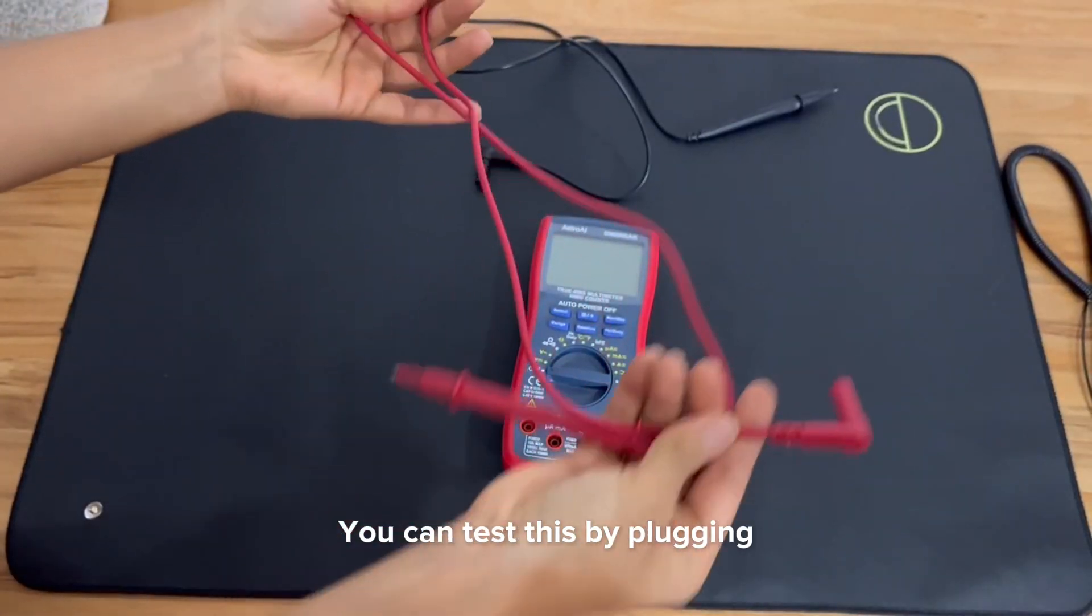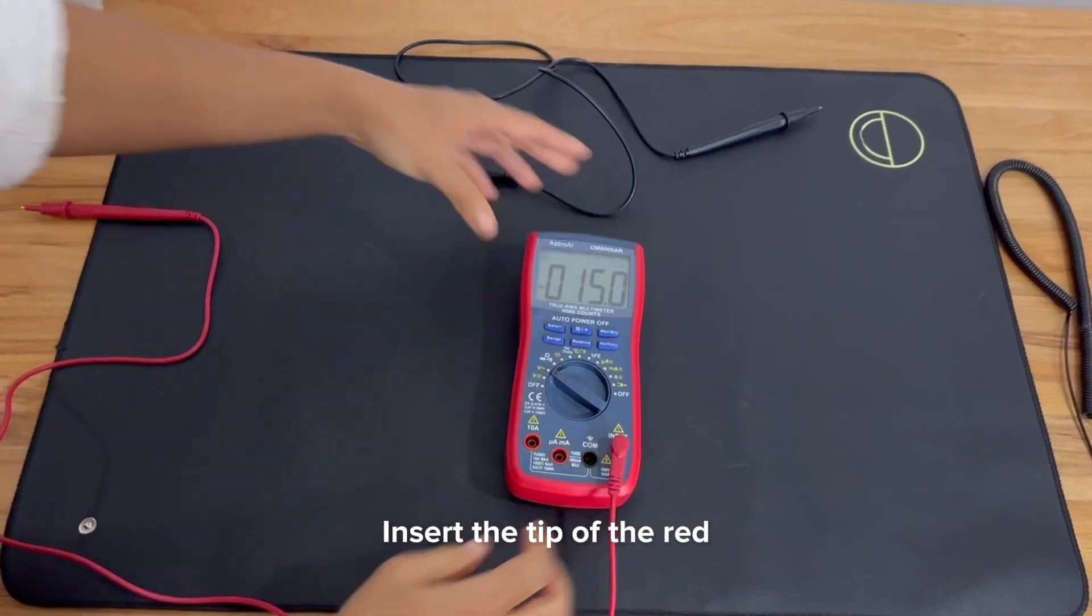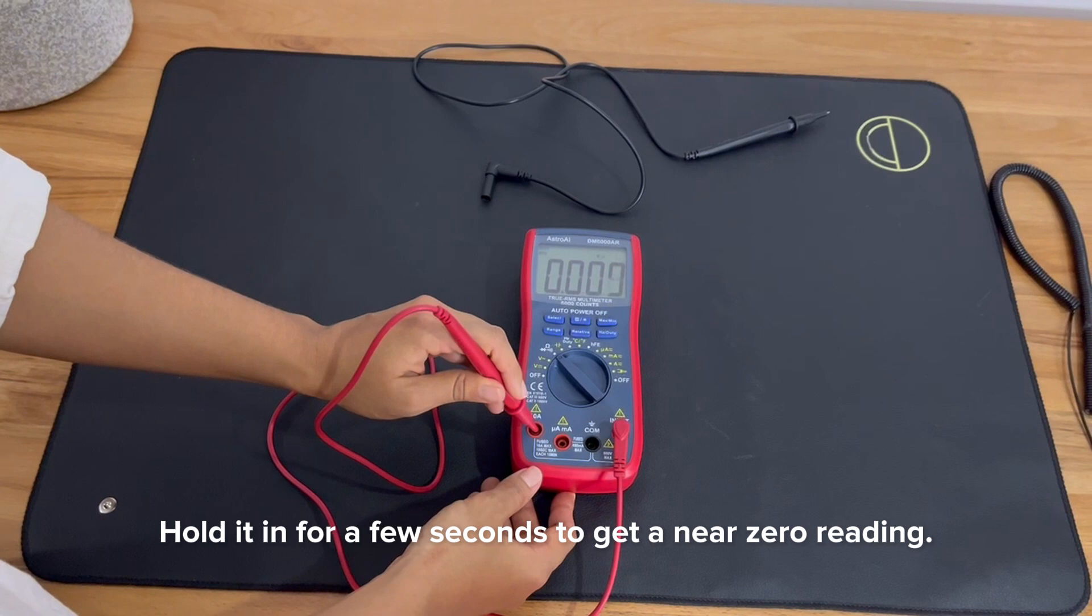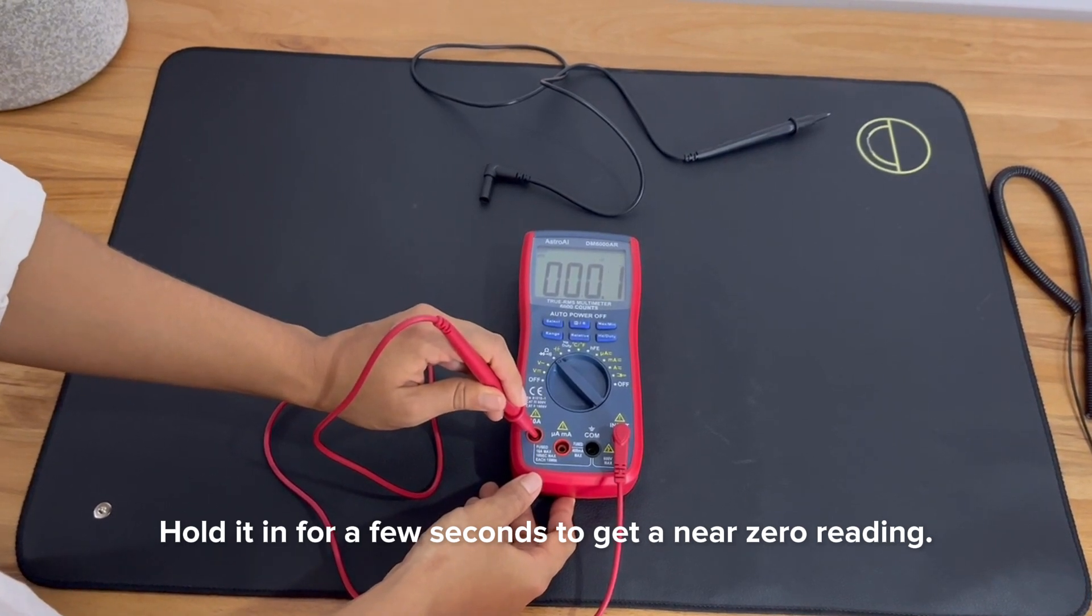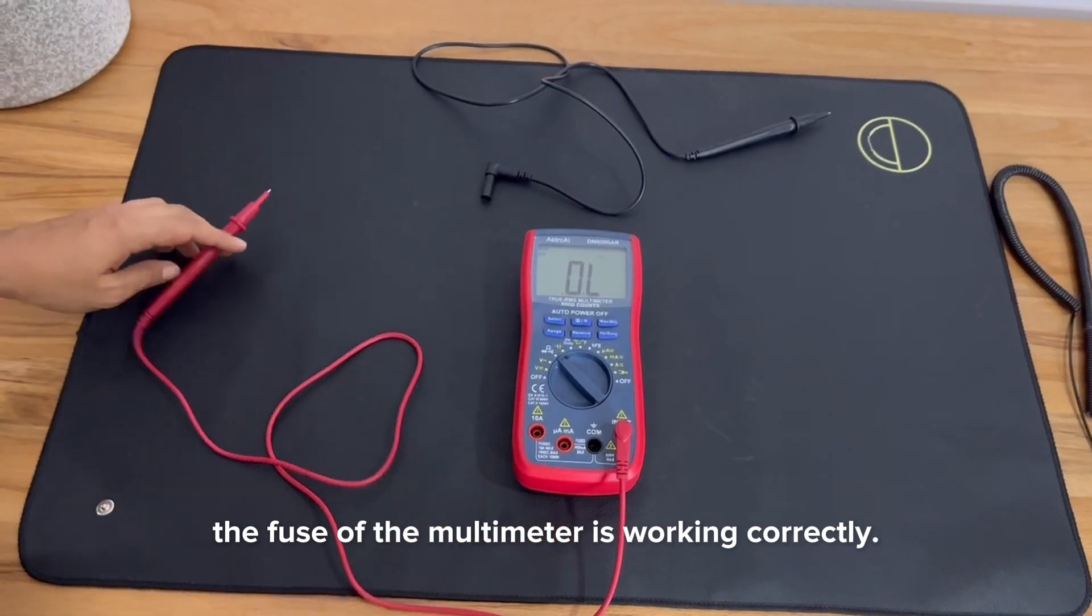You can test this by plugging the red lead to the voltage ohm jack of your multimeter. Insert the tip of the red probe to the multimeter's amp jack. Hold it in for a few seconds to get a near-zero reading. This indicates that the fuse of the multimeter is working correctly.